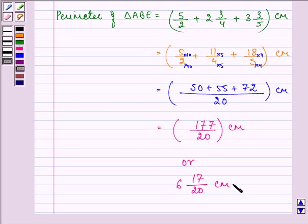So we have the perimeter of triangle ABE as 177 by 20 centimeter or 8 and 17 by 20 centimeter. This completes the first part.